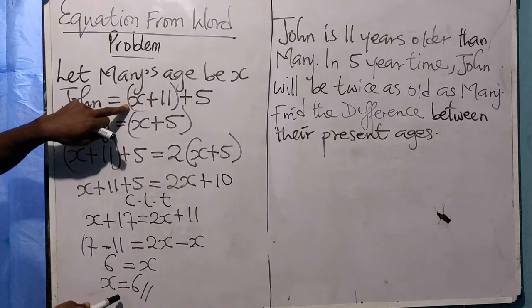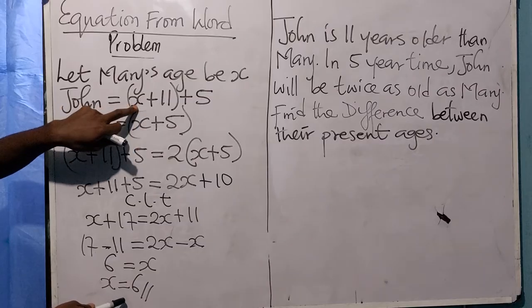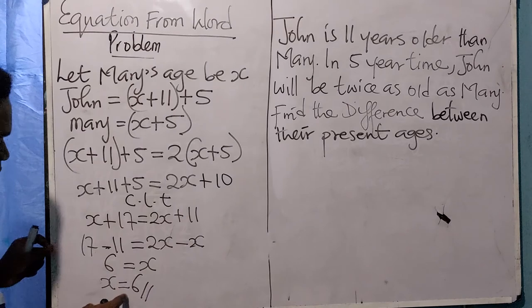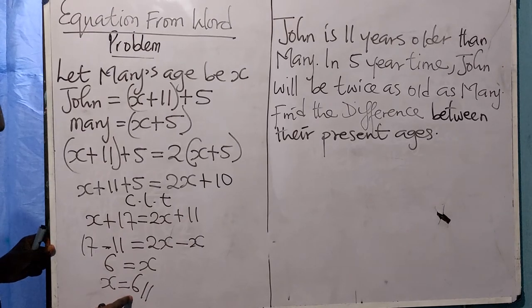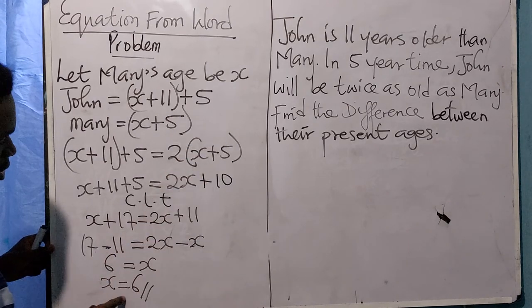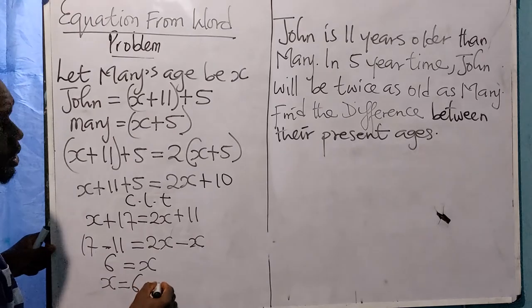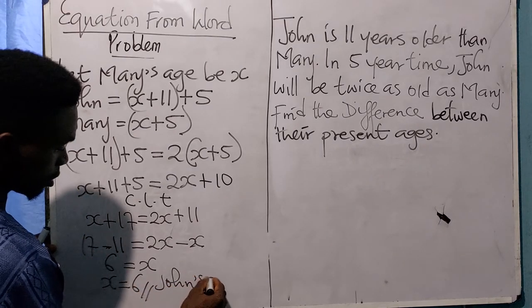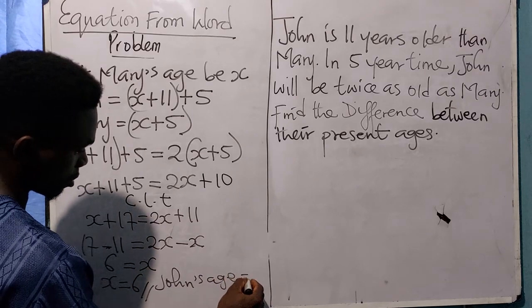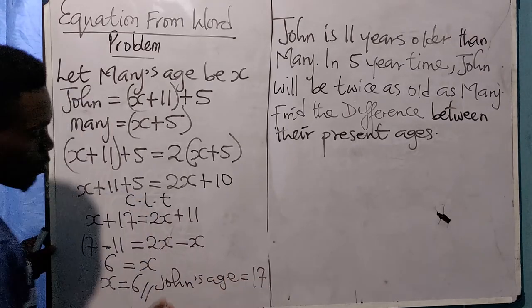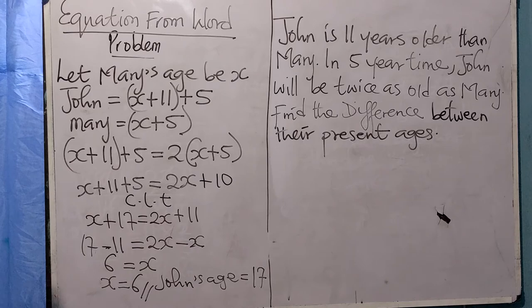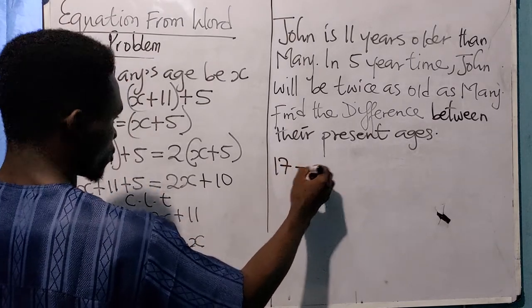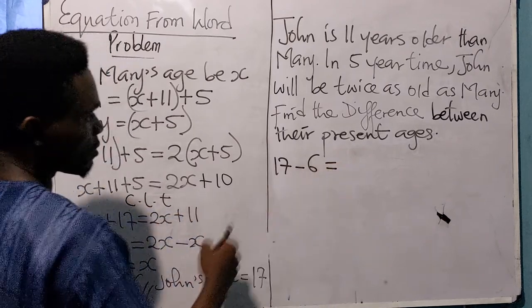John's age is 17. Now, what is the difference between their ages? It simply means 17 minus 6, which equals 11. So the difference between their ages is 11 years.